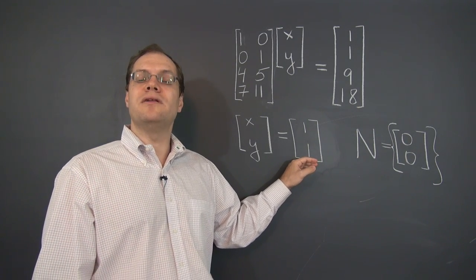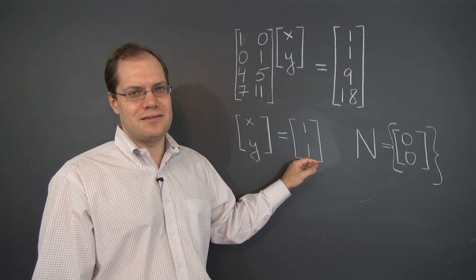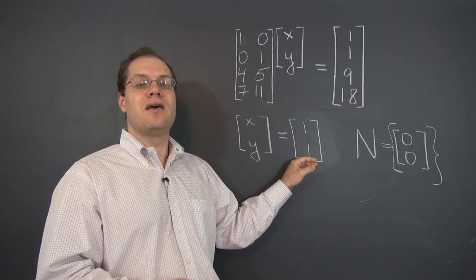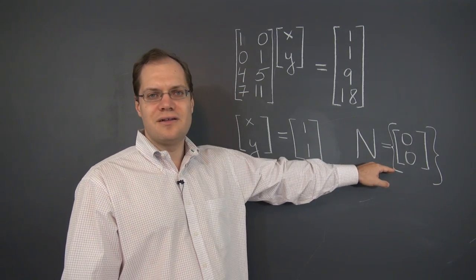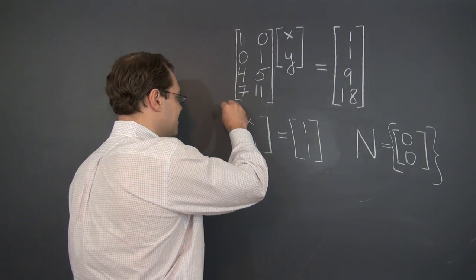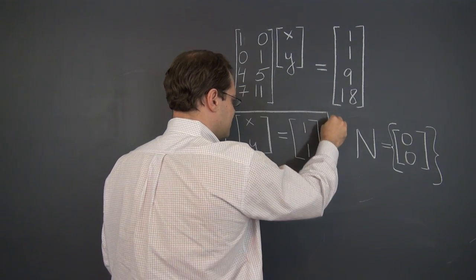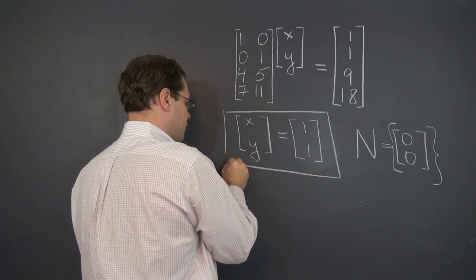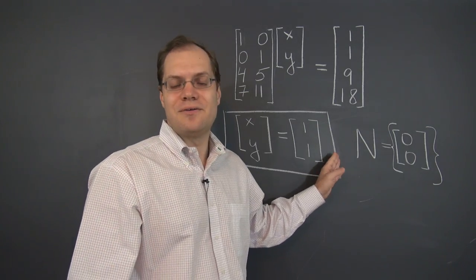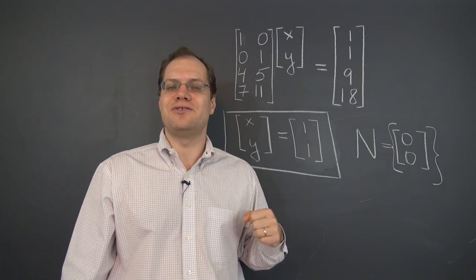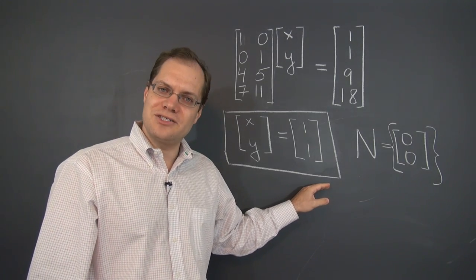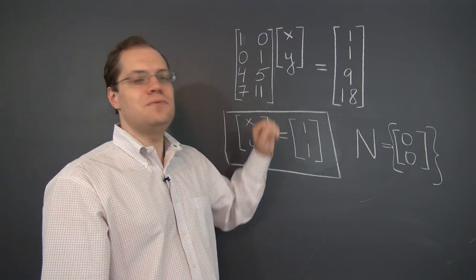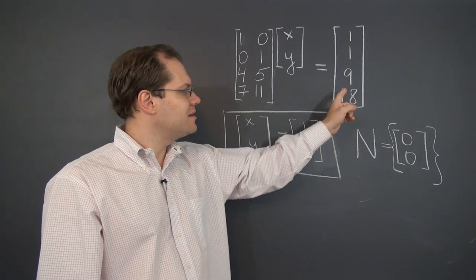So what does the trivial null space imply about the solution of the system? Well, it indicates that the solution is unique. Indeed, we know that when vectors are linearly independent, then any decomposition, if possible, is unique. So trivial null space implies that this system has a single solution, 1, 1. No null space to add because adding the zero vector doesn't do anything to the solution.